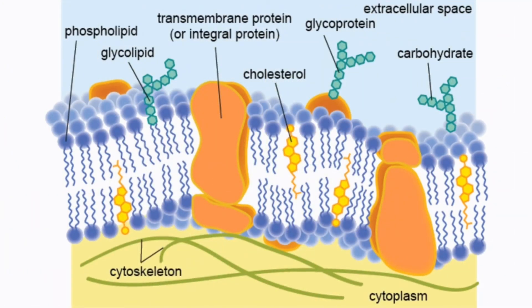Not only do we have sugar chains on lipids, but we also have sugar chains on proteins, and these are known as glycoproteins. We also have cholesterol embedded into the cell membrane. Since cholesterol is a lipid, it's going to sit in between the two edges of the membrane, along with the hydrocarbon chains and all the other hydrophobic substances. The main purpose of cholesterol is to maintain a stable fluidity of the membrane — making sure it's not too fluid or too stiff.